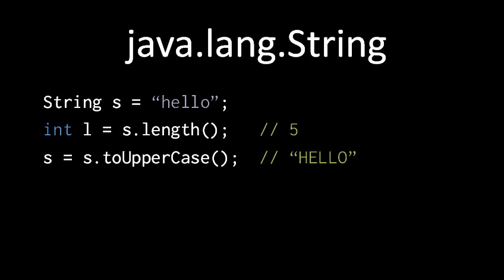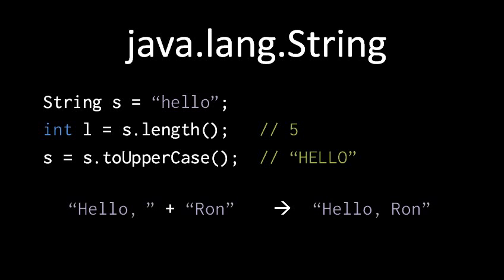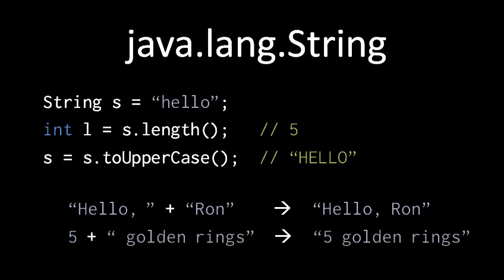In addition to all the methods of String, the plus sign operator is defined to concatenate strings. When the operands to the plus sign are numbers, it of course performs addition, but when one or both of the operands are strings, then the plus sign will produce a new string which is a concatenation of its two operands. So if we have the plus sign with two operands — a string reading "hello, " and another string reading "Ron" — then this operation produces a new string that combines them into one. In the next example, only one of the operands is a string, so the other operand gets converted to a string and then concatenated, and the operation returns a single string in which they're joined together.